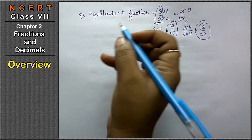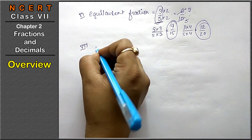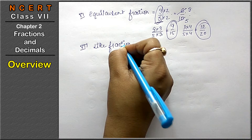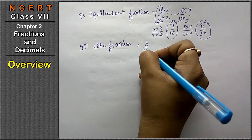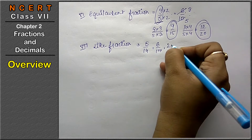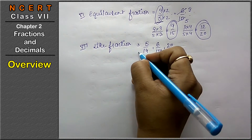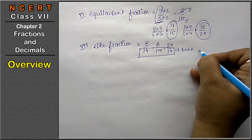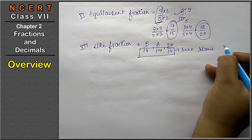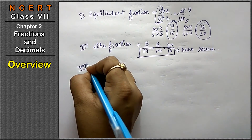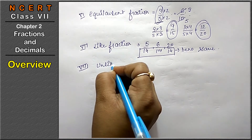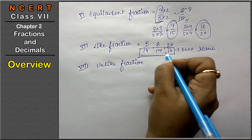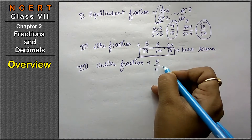The seventh type is the like fraction. Like fractions are fractions such as 5 upon 14, 6 upon 14, 20 upon 14 — fractions whose denominator is the same are called like fractions. Unlike fractions are those whose denominator is different, whereas in like fractions the denominator is the same.